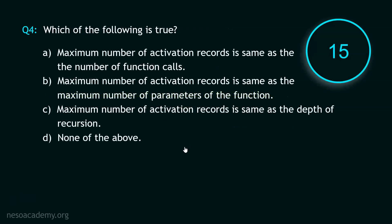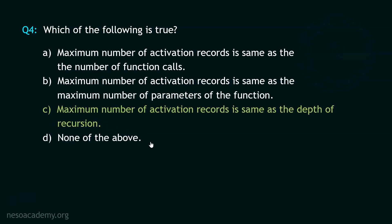And your time starts now. Stop. The correct option is option C. We learned that the maximum number of activation records is the same as the depth of recursion. Whenever we talk about activation records, it depends on the depth of recursion, not the number of function calls. Option C is clearly the correct option. Now let's move to question number 5.